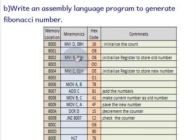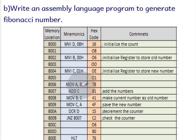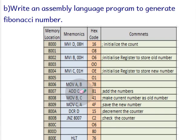Next we do MVI B, 00 to initialize register B to store the old number, and MVI C, 01 to store the new number. Then MOV A, B transfers the old number (zero) into register A. With ADD C, the number in A gets added with C — so zero plus one equals one — and one becomes the new number in A.